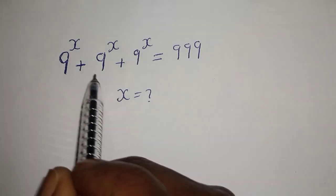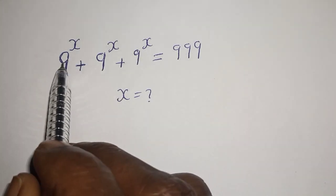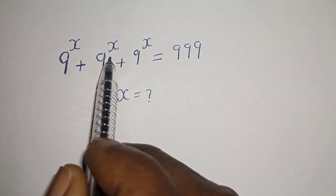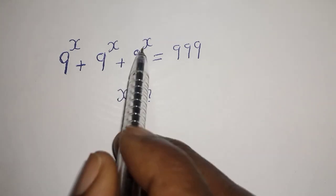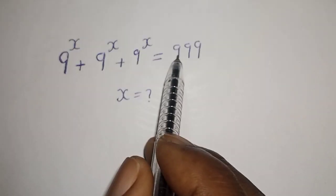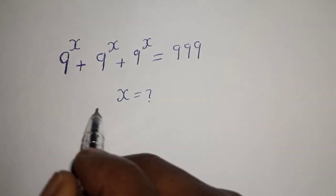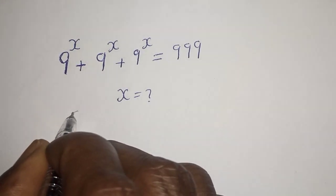How to solve for s from this equation: 9 raised to power s plus 9 raised to power s plus 9 raised to power s is equal to 999.